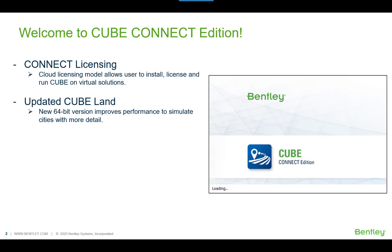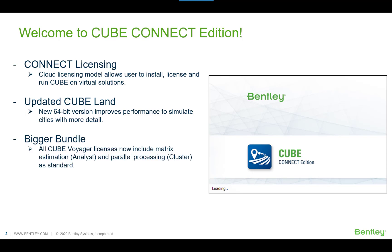You can now do land use modeling with ease with our updated Cube Land, which is a 64-bit solution, and improved performance for simulation of larger cities with details. Starting with Cube Connect Edition, all standard Cube Voyager licenses will now include Cube Analyst, Cube Analyst Drive for matrix estimation, and Cube Cluster for parallel processing. Cube Connect Edition also supports up to ArcGIS 10.8 for Cube GIS functionalities.